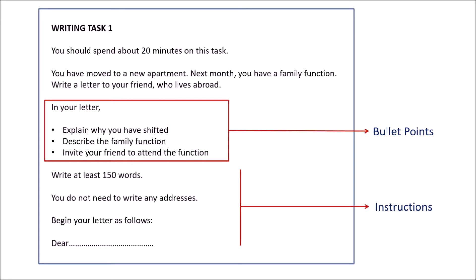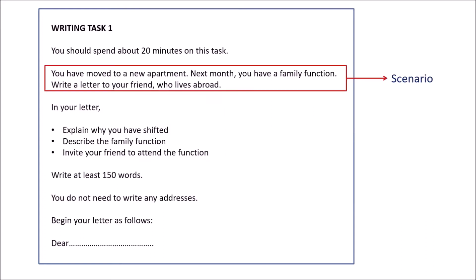As you can see in the question statement, there are three bullet points and some general instructions to follow. The instructions say: spend about 20 minutes on the task, write at least 150 words, you do not need to write any addresses, and you should begin your letter as directed. It's pretty simple and clear.